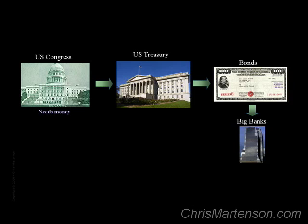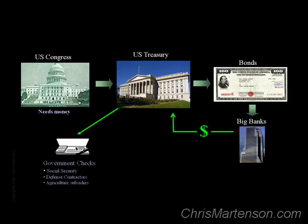At auction, the banks purchase these bonds, and then money gets sent into the Treasury coffers, where it can be dispersed for the usual array of government programs. Now, I promised you that I'd show you how money first comes into being, and so far that hasn't happened, has it? The bonds are being bought with money that already exists in the banking system.